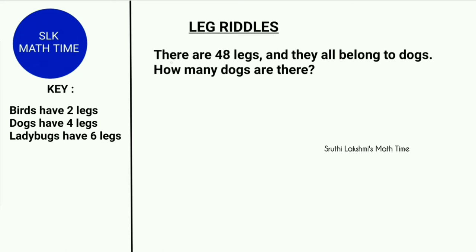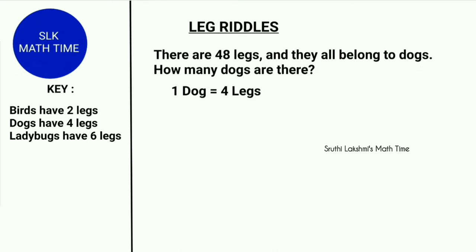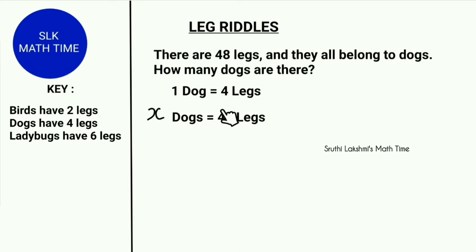Let's see an example. There are 48 legs and they all belong to dogs. How many dogs are there? They are saying there are 48 legs and they all belong to dogs. Remember, one dog has four legs. So we have to find x dogs that have 48 legs. Here we have to find the x value.